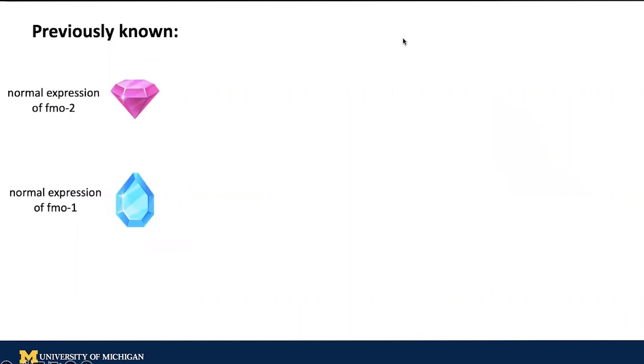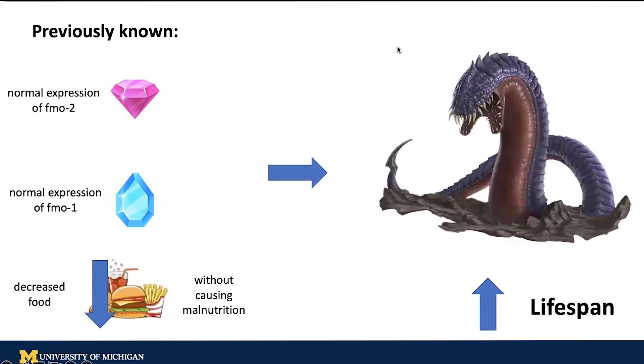Another thing we already know is that when we have the normal power gems but give the worm less food, we also get a long-lived worm monster. So decreased food alone can increase lifespan of the worm monster.